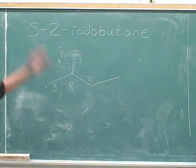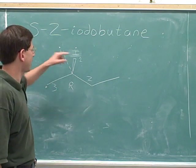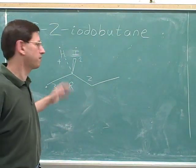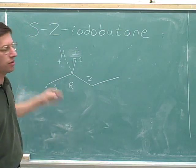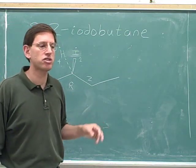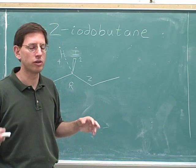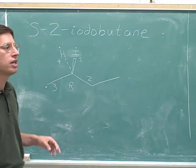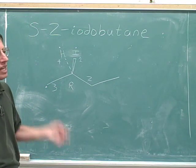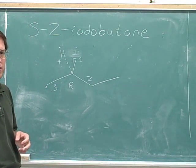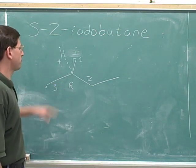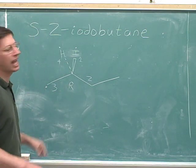So did we make the right guess? No — it turns out we made the wrong guess. We guessed that the hydrogen goes on the dash and the iodine goes on the wedge, and that turned out to be wrong. But it's no tragedy — we can easily fix this so that it'll be S. Here's where we go back to the single swap rule: any time you make a single swap, you automatically get the opposite configuration. We know this configuration is R, so to get S, we can make any single swap.